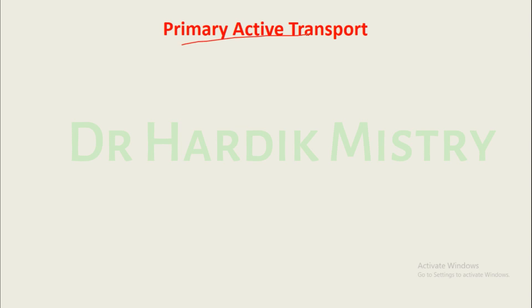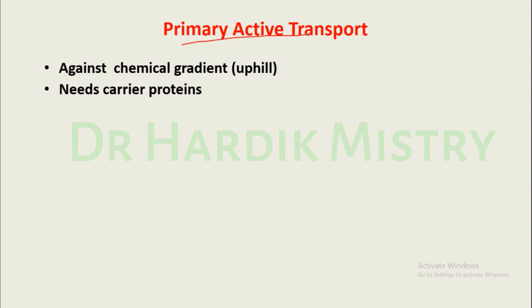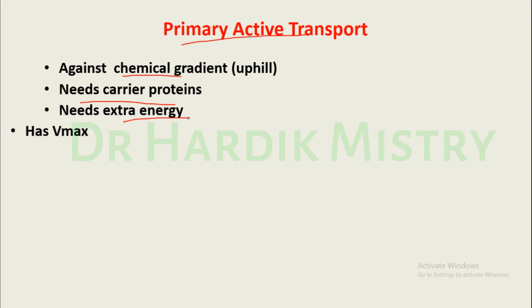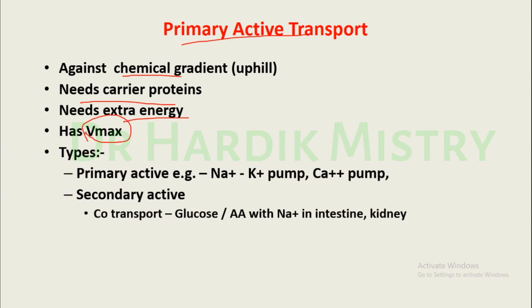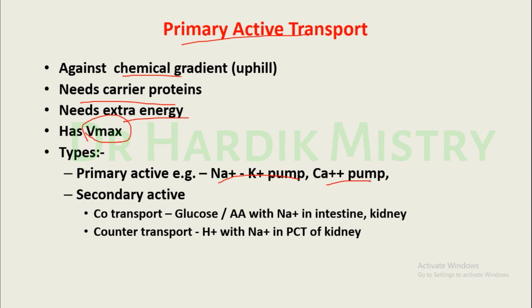Primary active transport: the movement of a substance occurs against the concentration gradient, so it is known as active transport. It requires carrier proteins, needs extra energy, and has a Vmax or saturation in the transport process. Types include primary active transport and secondary active transport. In primary active transport, examples include the sodium-potassium pump and the calcium pump.